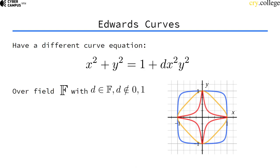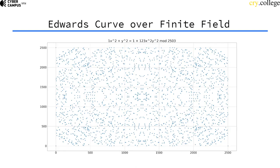And you can think of them as bent unit circles, essentially. So, even if we plot them over a finite field, this is the same base field we have used earlier, mod 2503. You can see that they look like they are a circle, right?